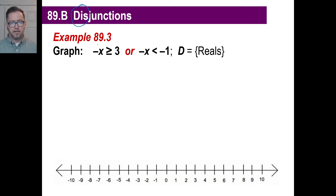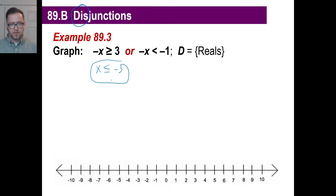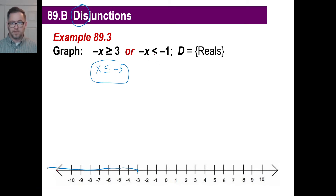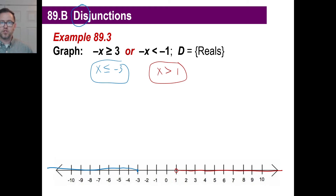So let's do it. Negative x is greater than or equal to 3. We can probably do that mentally pretty quickly: x is going to be less than or equal to negative 3. We are allowed to use reals, so x less than or equal to negative 3 — we're allowed to color that in. Then negative x is less than negative 1, so x is greater than positive 1. Not allowed to use 1 — it's an open circle. There are our two answers. That's a disjunction.